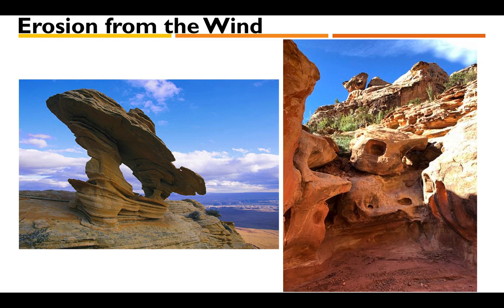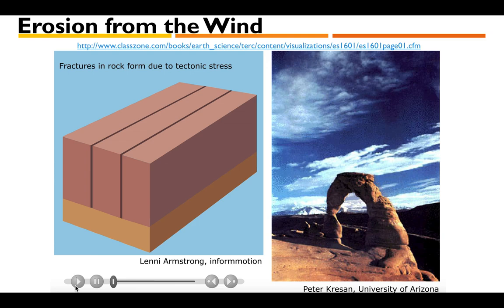Erosion from wind can take a very long time to have an effect, but in desert areas with a lot of wind and sand you can see some remarkable features. There are rock formations that have been reshaped over time — rocks with holes and missing pieces caused by wind blowing sand against them. Take a look at this animation showing how a rock in the shape of a block can be transformed into something like an arch.